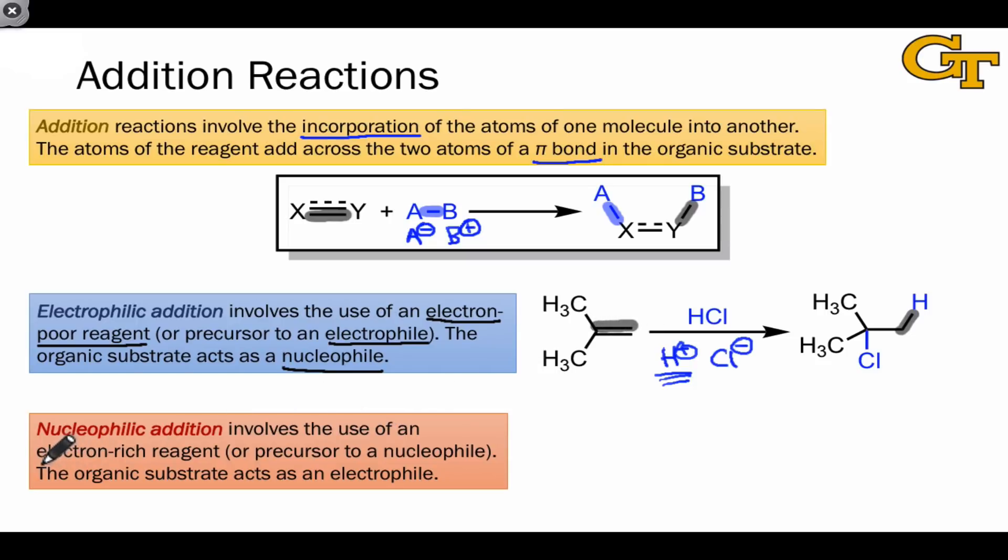Naturally then, nucleophilic substitution involves the use of an electron-rich reagent, which is a nucleophile itself or might serve as a precursor to a nucleophile. The organic substrate here acts as an electrophile, an electron acceptor.